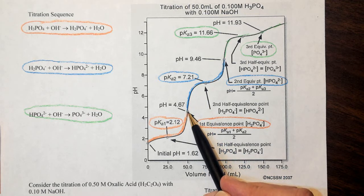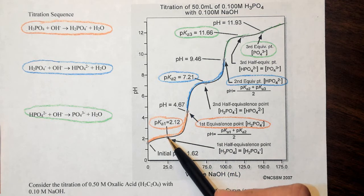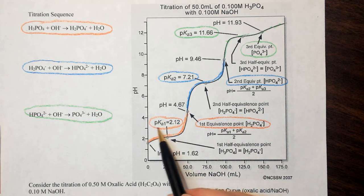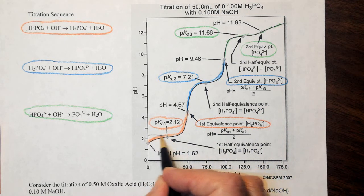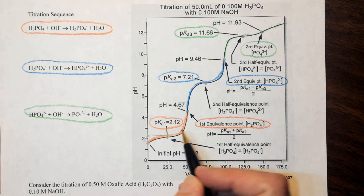So we identify this as the equivalence point, which means that half of that volume is our half equivalence point. So at our half equivalence point, we can read off of the titration curve, just going straight ahead or straight across, that pKa1 equals 2.12.